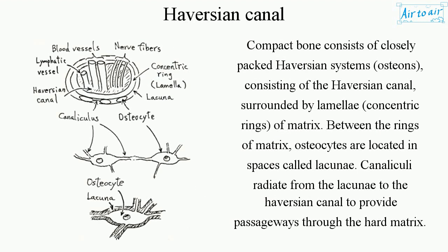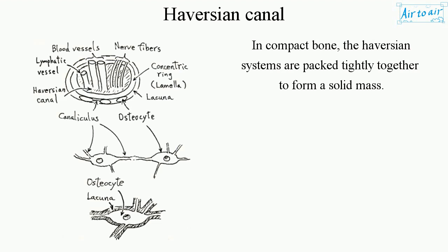Compact bone consists of closely packed Haversian systems, or osteons, consisting of the Haversian Canal surrounded by lamellae — concentric rings of matrix. Between the rings of matrix, osteocytes are located in spaces called lacunae. Canaliculi radiate from the lacunae to the Haversian Canal to provide passageways through the hard matrix. In compact bone, the Haversian systems are packed tightly together to form a solid mass.